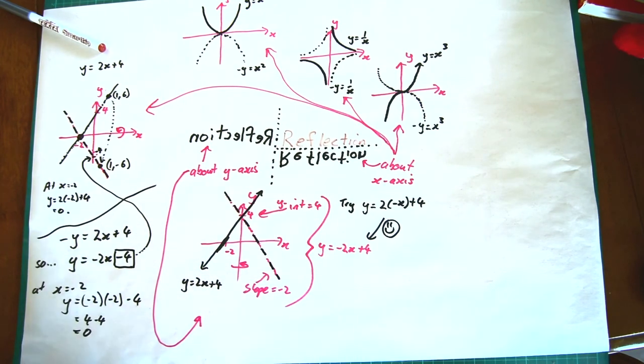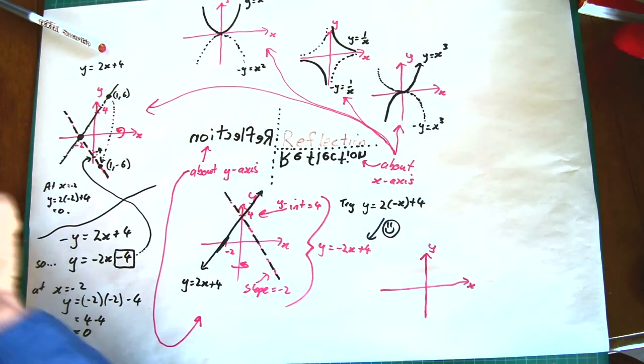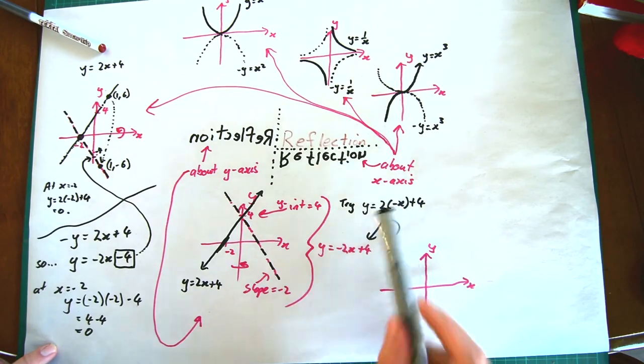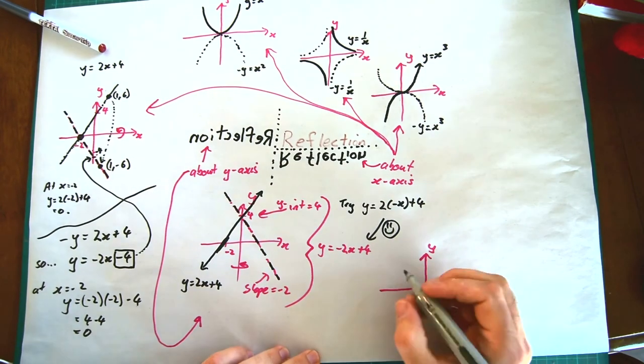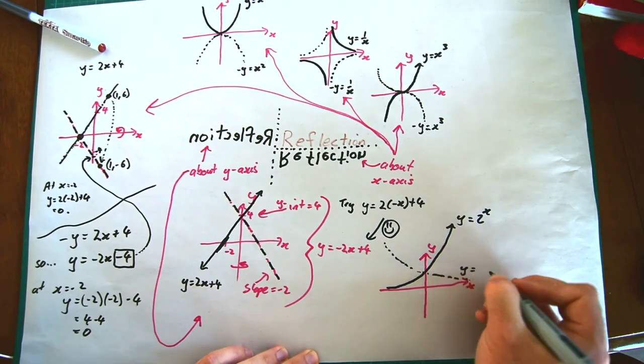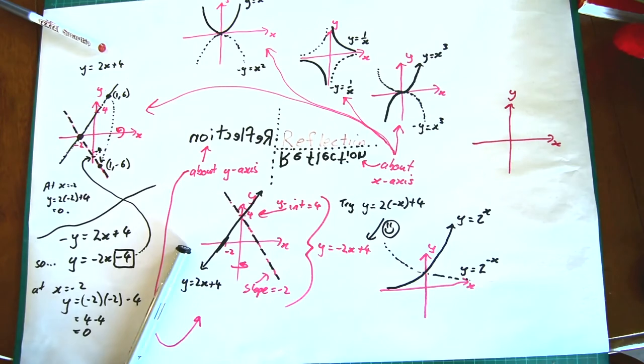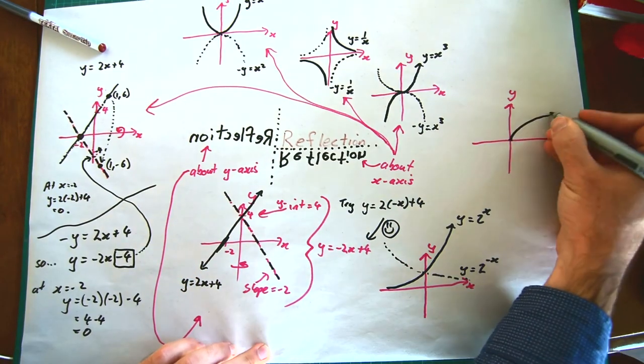If we ever want to take a shape and flip it about the x-axis, if we want to turn it upside down, then we use exactly the same equation, but we replace y with a negative y. If we want to do a reflection about the y-axis, that is we want to flip it from left to right, then we take our x and we replace it with a negative x.